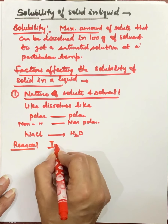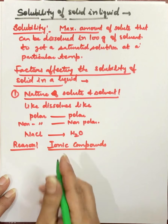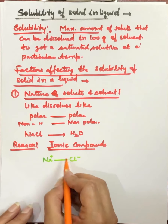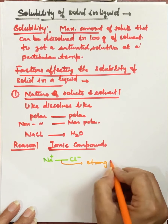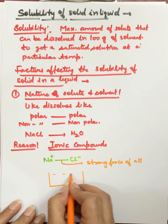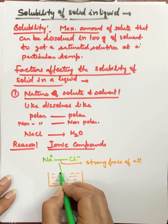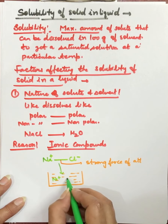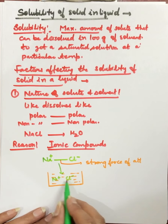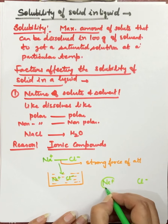The reason for ionic compounds dissolving in water: if we have NaCl, there are sodium ions and chloride ions with a strong force of attraction between them. But when we add this ionic compound to water, the forces of attraction between the ions break, and sodium and chloride ions separate out — we say this is soluble in water.